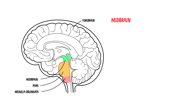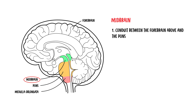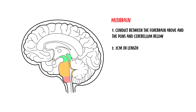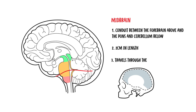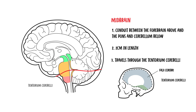It is the most superior part of the brainstem and acts as a conduit between the forebrain above and the pons and the cerebellum below. The midbrain is approximately 2cm in length, making it the smallest of the three regions of the brainstem. As it ascends, it travels through the opening in the tentorium cerebelli.